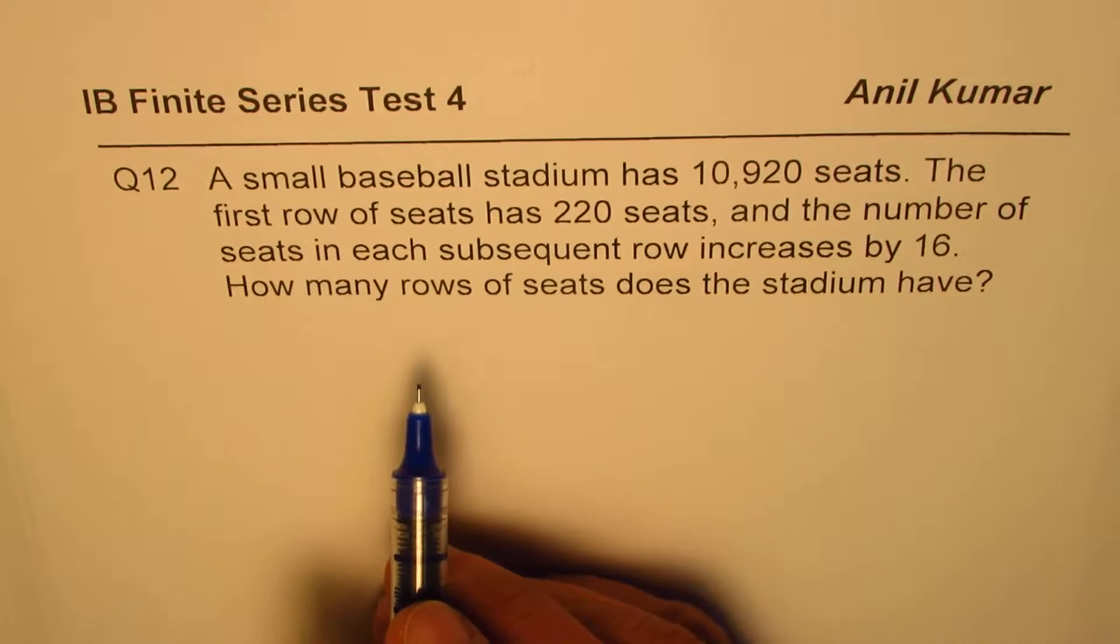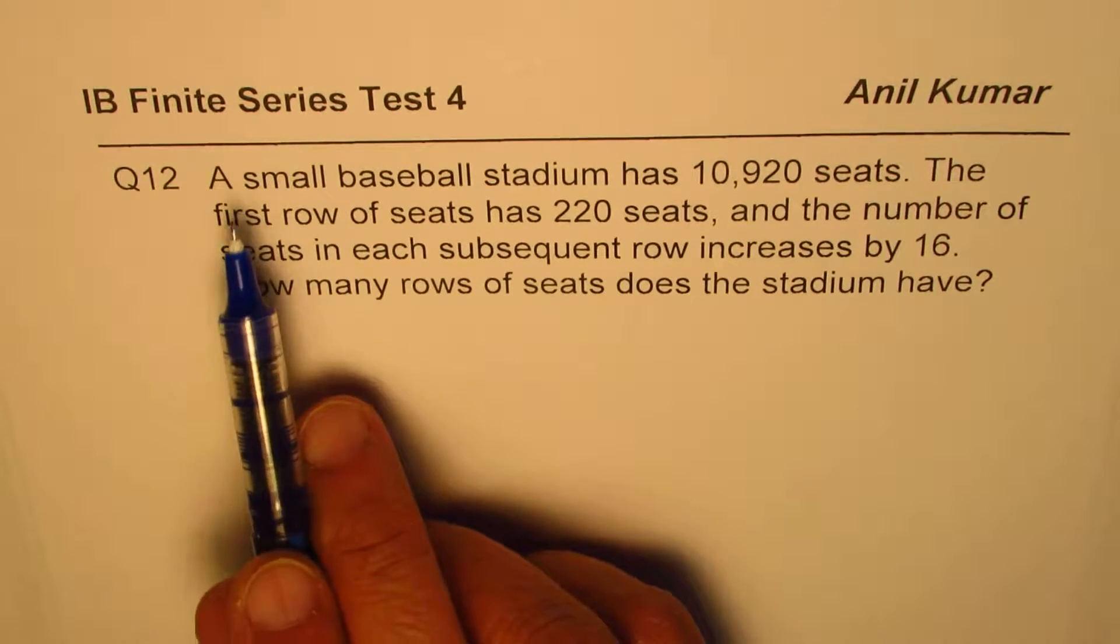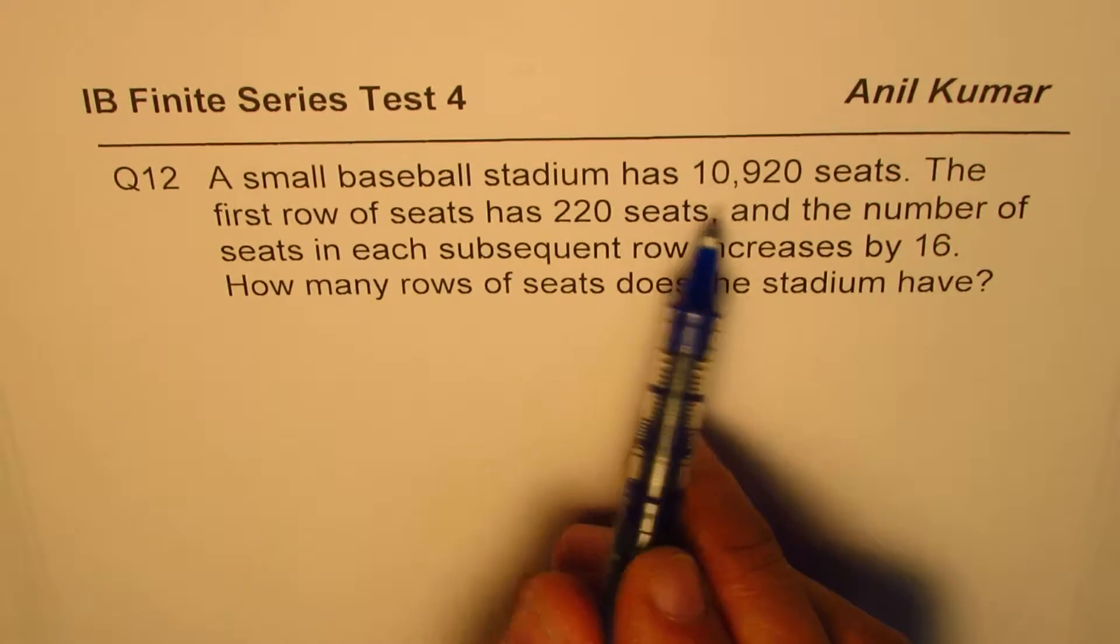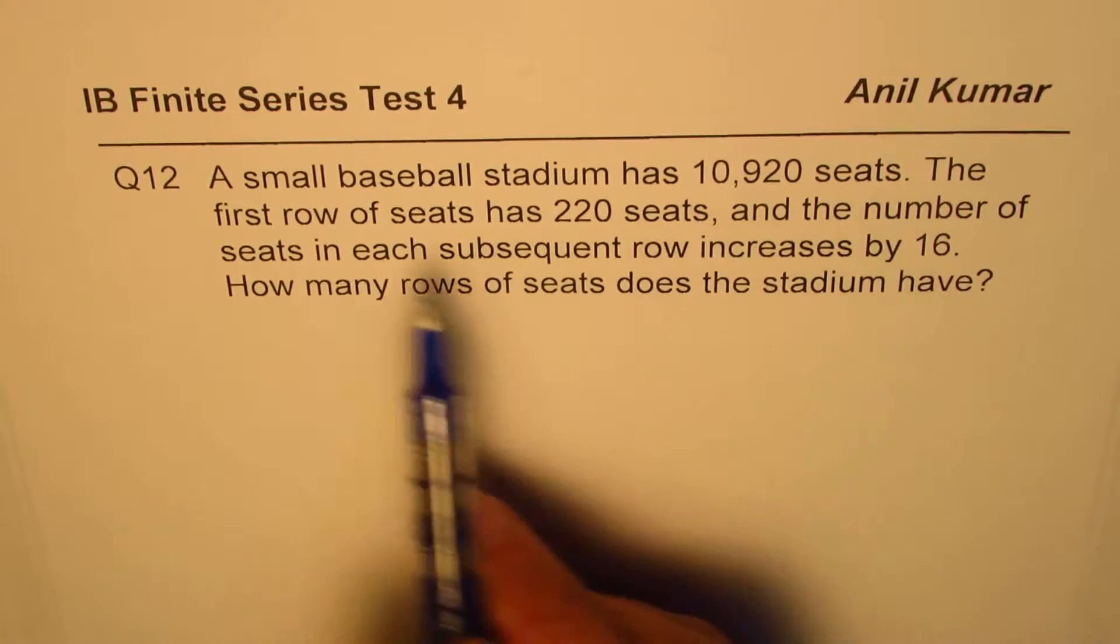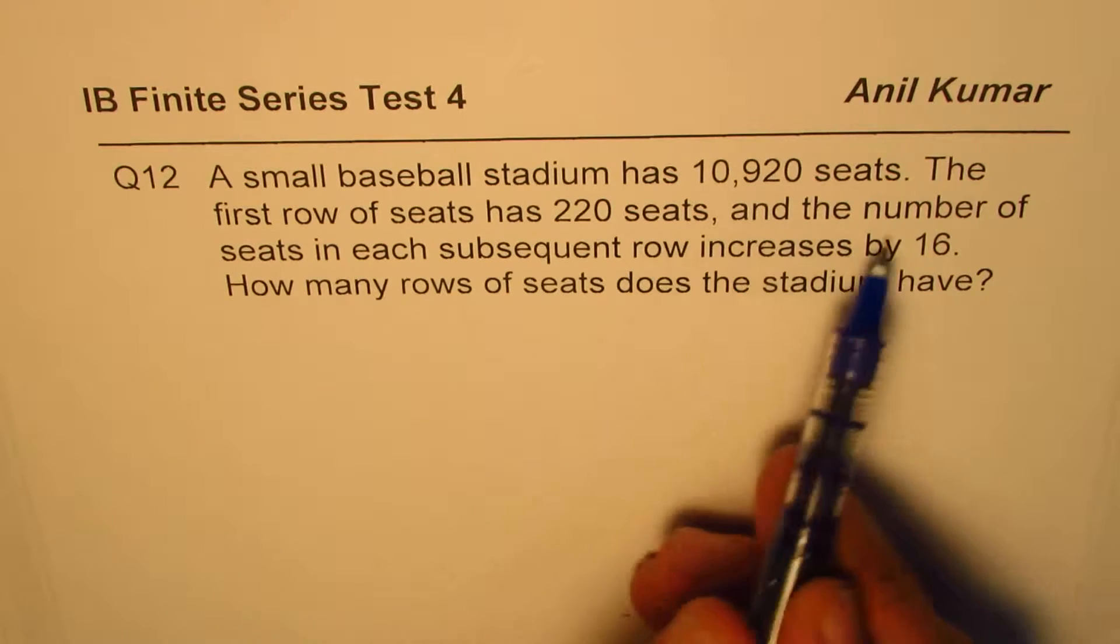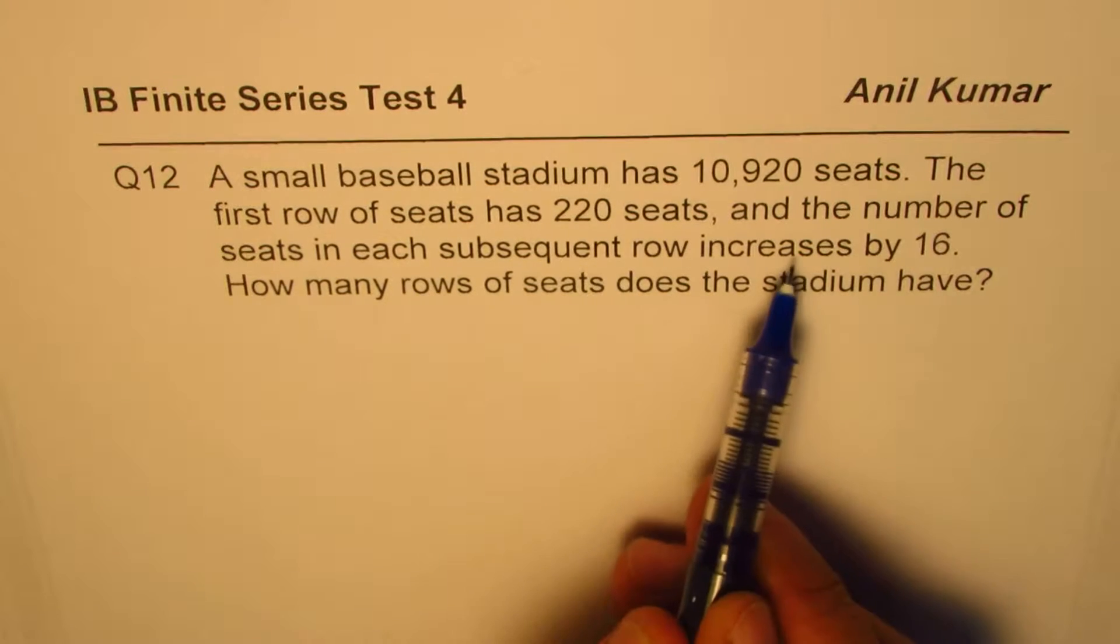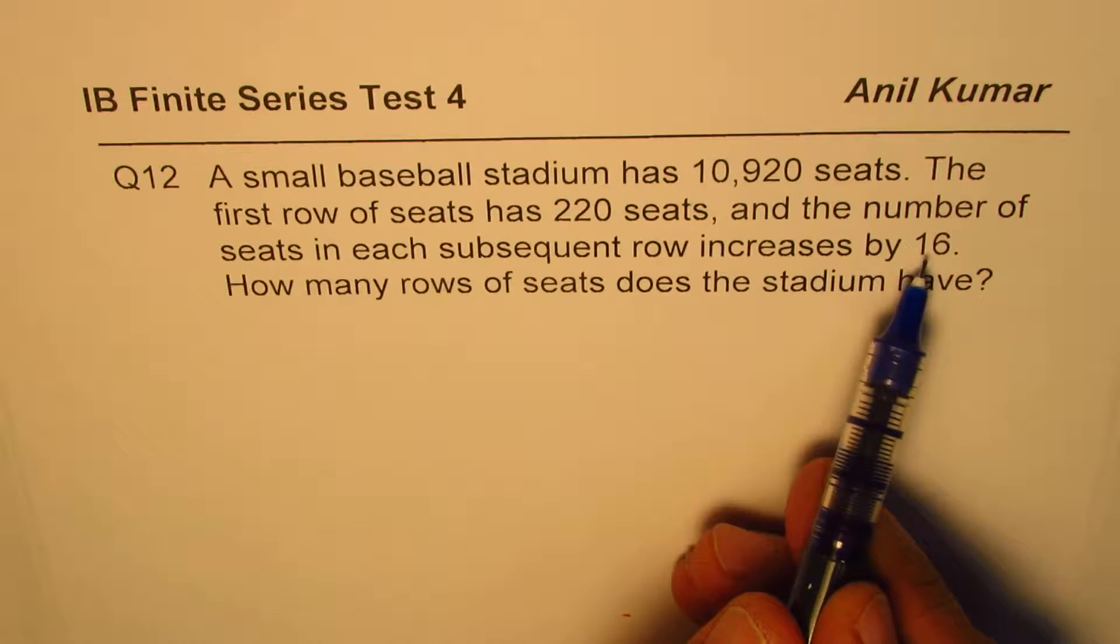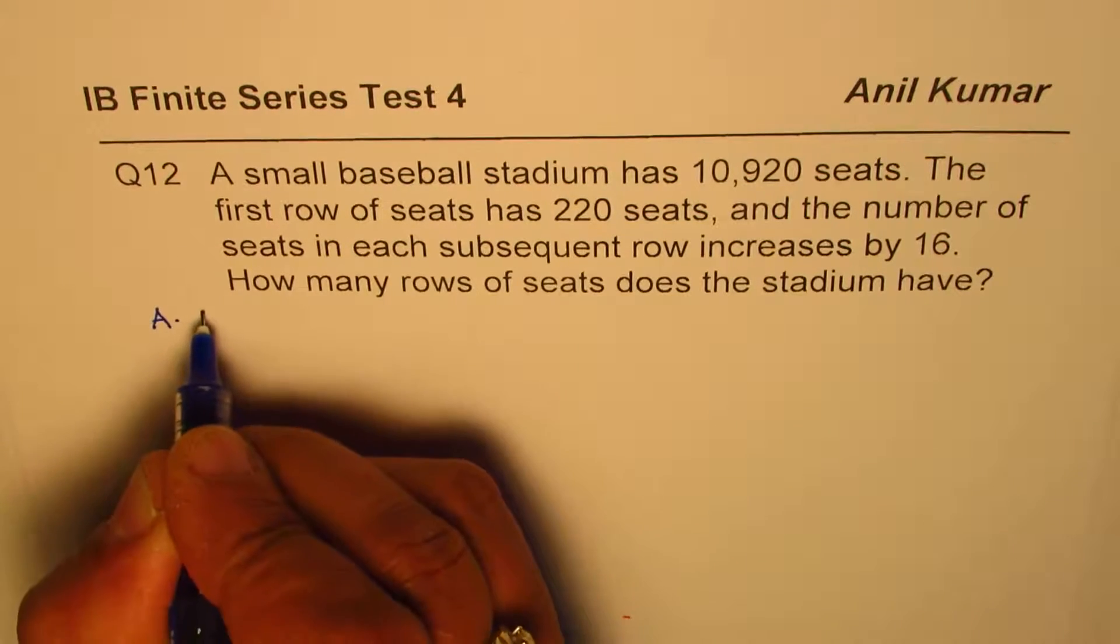So that's the question for you. Let us see how to figure it out. We are given total number of seats. The first row has 220 seats and the number of seats in each subsequent row increases by constant amount which is 16. So we are talking about arithmetic series.